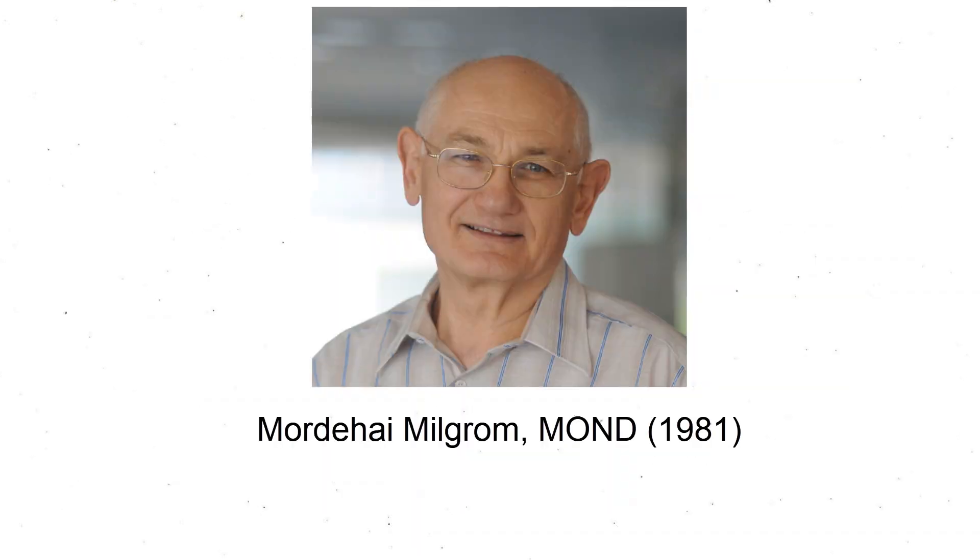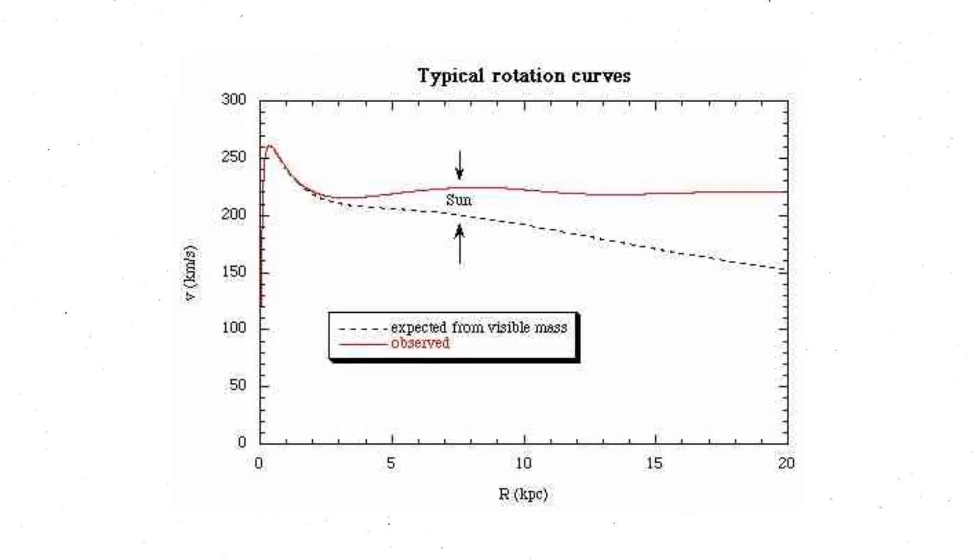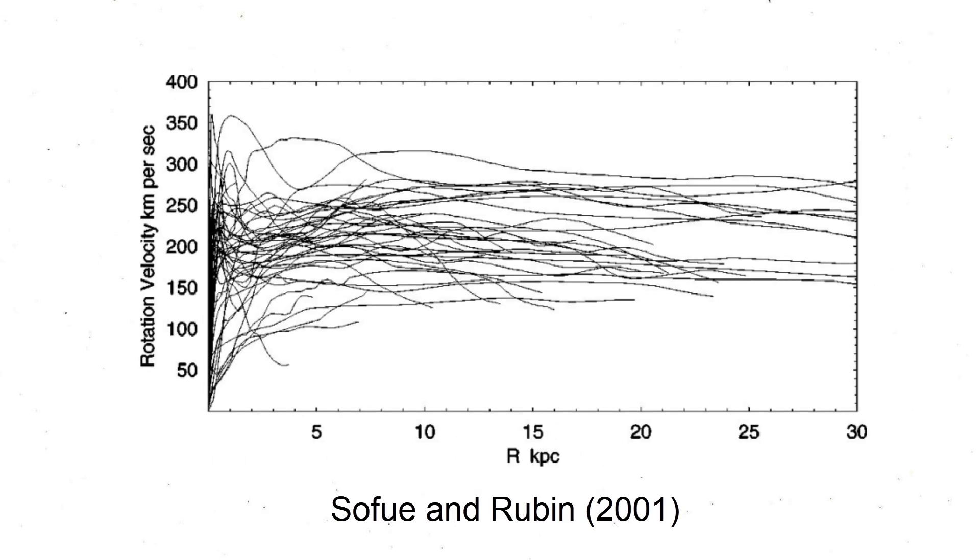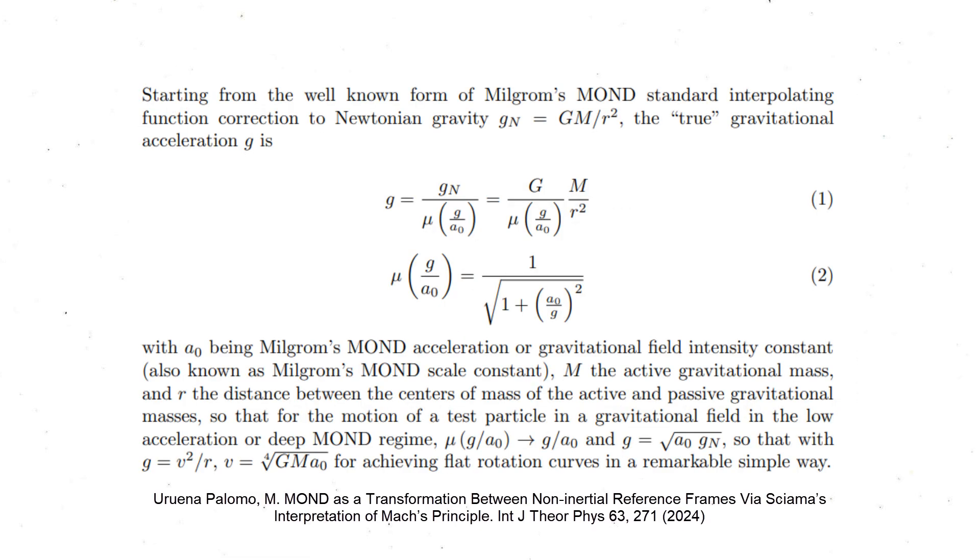Modified Newtonian dynamics, or Milgromian dynamics, was first proposed in 1981 by Milgrom as a modification to inertia or to gravity. It was explicitly constructed to obtain flat galactic rotation curves to explain the dark matter observations in galaxies.